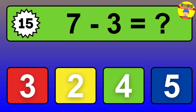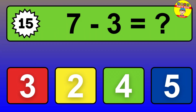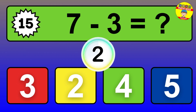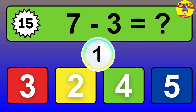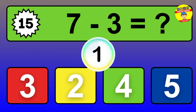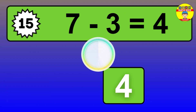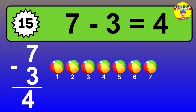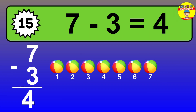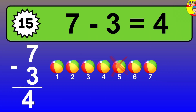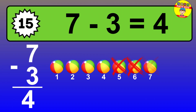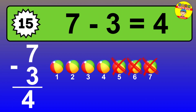Question 15. 7 minus 3 equals what? So the answer is 7 minus 3 is 4. Let's count it. 1, 2, 3, 4.